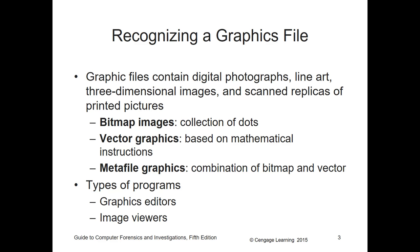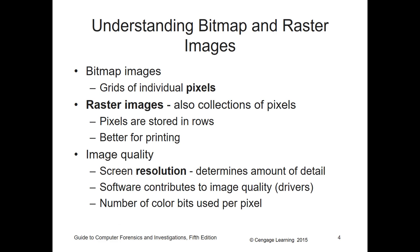There are two major types of programs when dealing with graphic files: a graphic editor and a graphic/image viewer. Bitmap images have grids of individual pixels, while a raster image is also a collection of pixels but stored in rows. Raster images are better for printing because they print in rows.